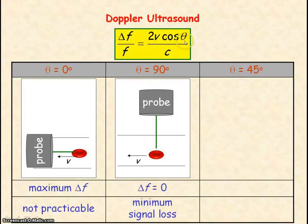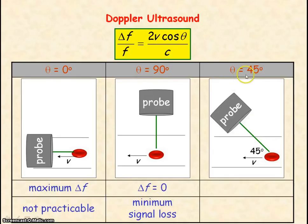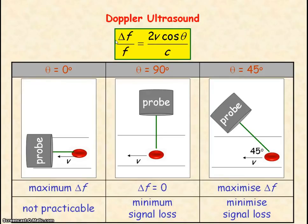For small angles of theta, you will have a large Doppler shift, a large change in frequency. However, the ultrasound will have to travel a greater distance inside the body to reach the blood cells in the artery, so there will be greater signal loss, greater attenuation or absorption of the ultrasound inside the body. As a compromise, an angle of 45 degrees is used in order to maximize Doppler shift but minimize the signal loss, so maximizing the signal that is received by the probe.